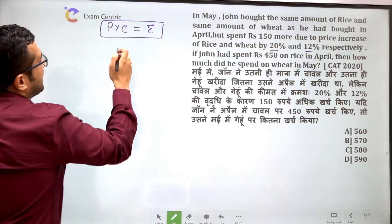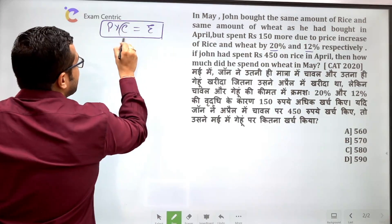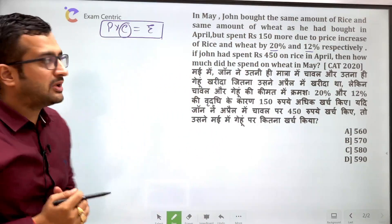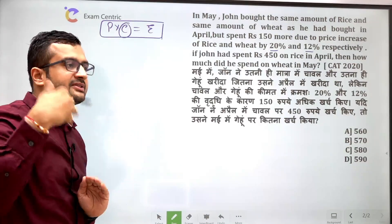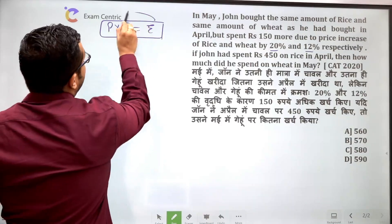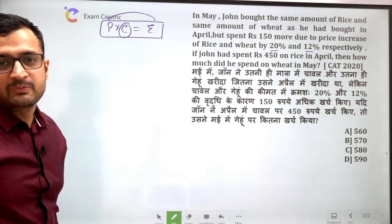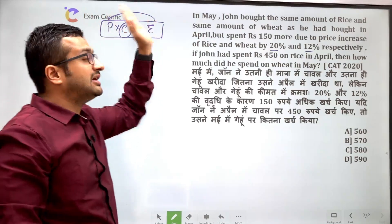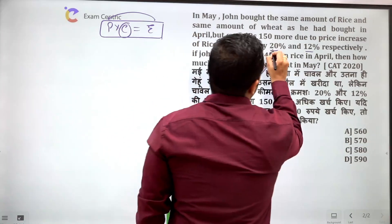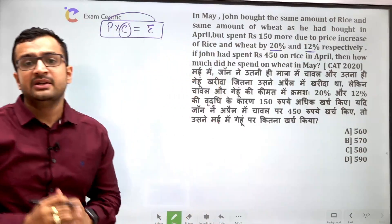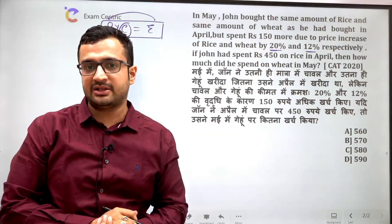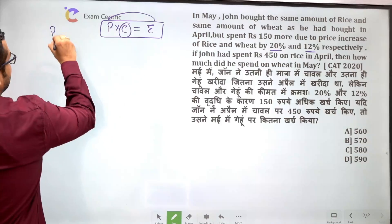अगर consumption constant है — जैसा कि सवाल में दिया गया है कि उसने same amount rice और wheat का खरीदा — तो जितना percent price increase होगा उतना ही percent expenditure भी increase हो जाएगा। क्योंकि यहाँ rice और wheat का price 20% और 12% increase हुआ है, इसका मतलब है कि उन पर total खर्चा भी 20% और 12% increase हो जाएगा।